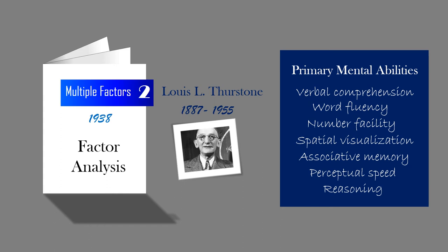Thurstone discovered later on that the abilities are not completely independent of one another; instead, there were modest correlations among the abilities. Thurstone was among the first to propose and demonstrate that there are numerous ways in which a person can be intelligent. His multiple factors theory has been used in the development of intelligence tests that yield a profile of the person's performance in each of the seven primary mental abilities.